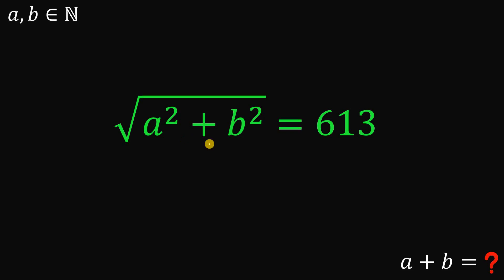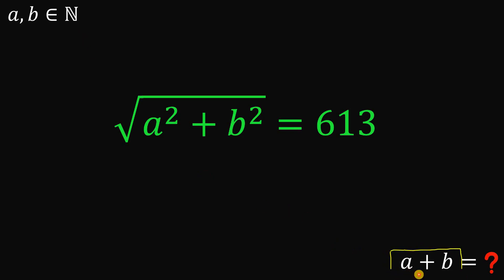So, given this equation — the square root of a squared plus b squared equals 613, wherein a and b are both natural numbers — our goal is to find the numerical value of a plus b.